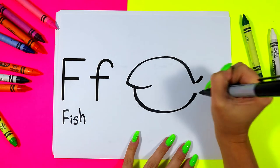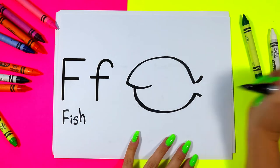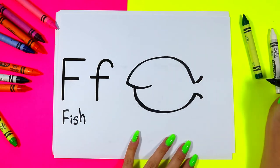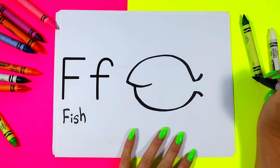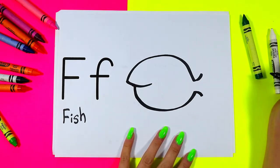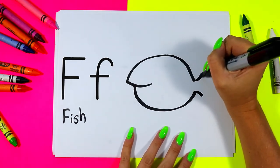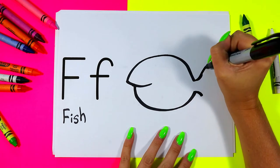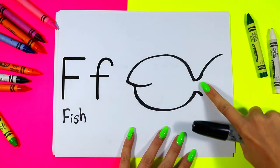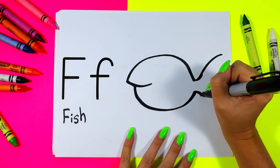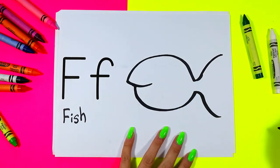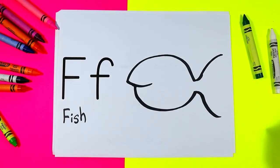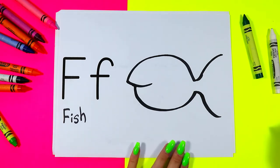In that gap we're going to do two curved lines out, just nice and small. From those lines we're going to do one curve line up and one curve line down, and we're going to create a beautiful fish tail.